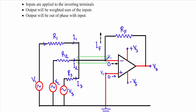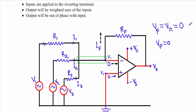This is the typical circuit of an operational amplifier summing or summer circuit. Here the output is connected with the inverting input, therefore this is a negative feedback operational amplifier. When an operational amplifier is connected in negative feedback, the positive terminal voltage will be equal to the negative terminal voltage. Here this inverting terminal is directly grounded, therefore Vp equals zero, so Vp equals Vn equals zero volts.